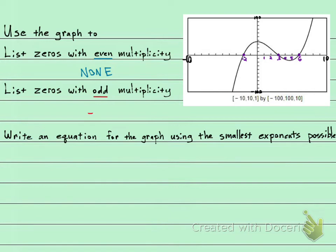And which zeros have odd multiplicity? Well, let's list them. We have negative 2. We have 3. And we have 6.